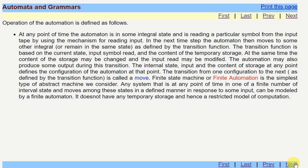Finite state machine or finite automaton is the simplest type of abstract machine that we considered. Since finite automaton does not have any temporary storage, it is called a restricted model of computation.